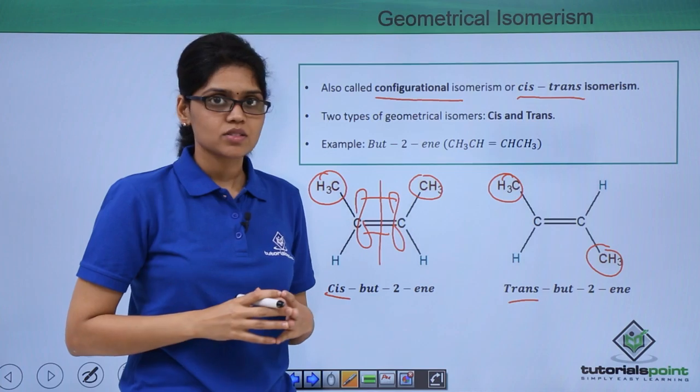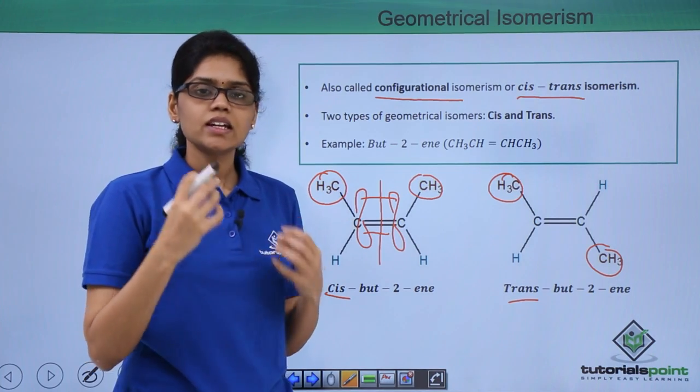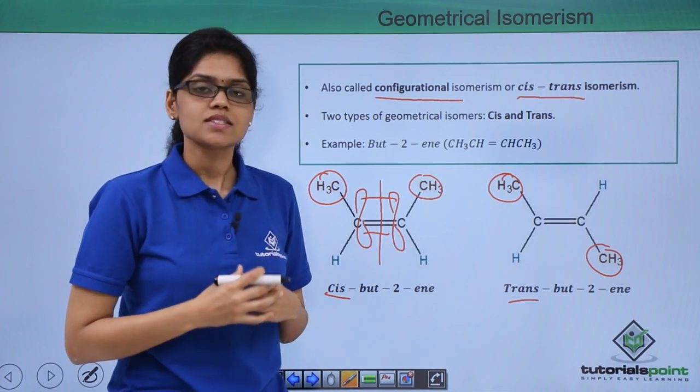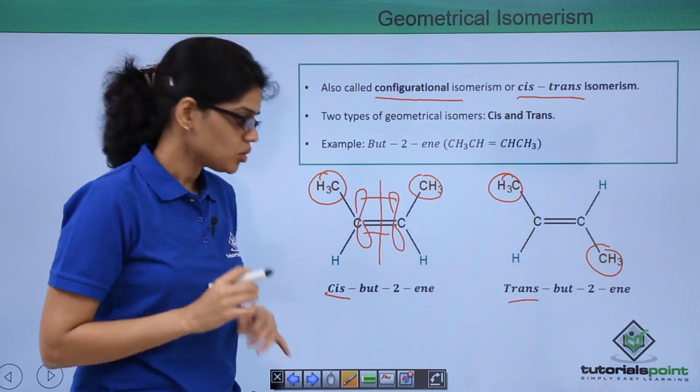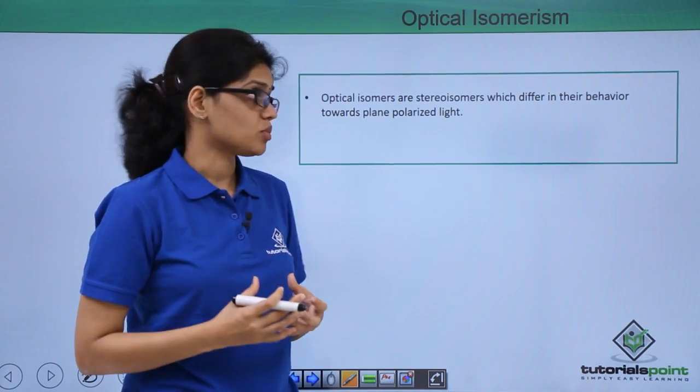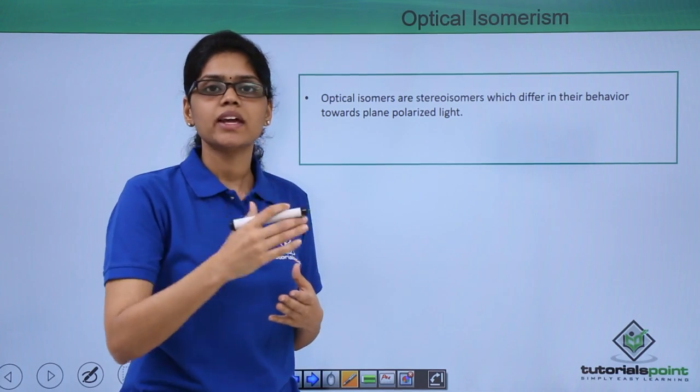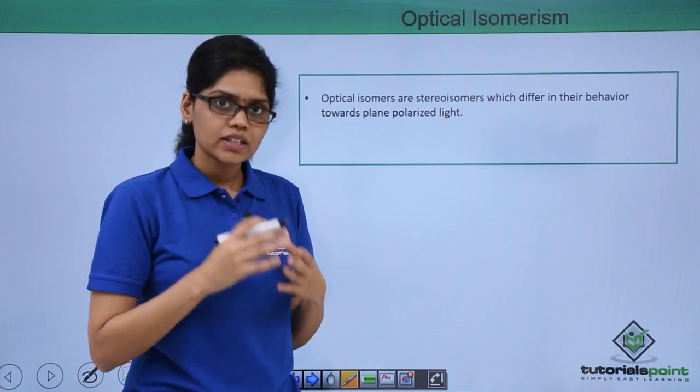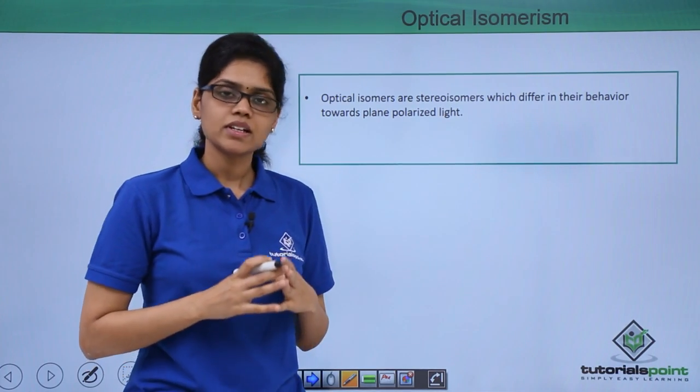I hope you are very clear on what is geometrical isomerism. We will study in detail about optical isomers later in your chapter. But for now please understand that optical isomers are stereoisomers which differ in their behavior towards plane polarized light. Details about optical isomers will be covered later.